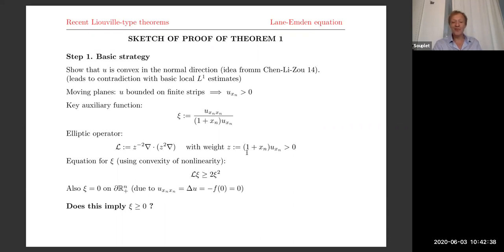Now the question is: with this weighted operator and this inequality, can we show that ψ is necessarily non-negative? If we can show that, it means U is convex in the x_n direction, and then we get the contradiction we want. This is not completely standard because of the weight. This kind of inequality is well-studied but not, it seems, with general weights. So we need the following lemma, which plays an essential role in our proof.